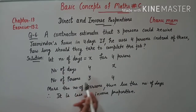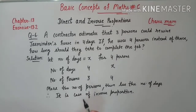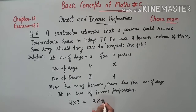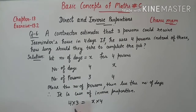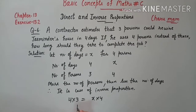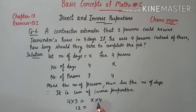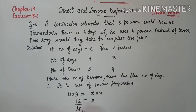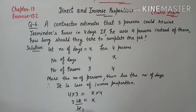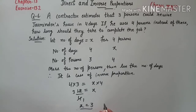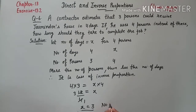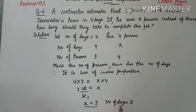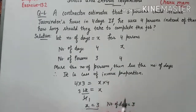तो हम given का use करेंगे: 4 days में number of persons 3 है, so 4 × 3 = x × 4. 4 × 3 = 12, और 4 divide में हो जाएगा, so x = 12 ÷ 4 = 3. Number of days आए हैं 3 — यानि 4 persons उसी work को 3 days में complete करेंगे।